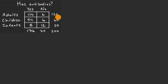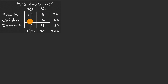Let's say we go out and collect a bunch of data. We test 120 adults and 114 have antibodies, six don't. We test 60 children, 54 have antibodies, six don't. We test 20 infants and then eight have antibodies and 12 don't.